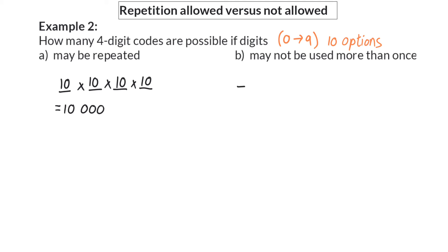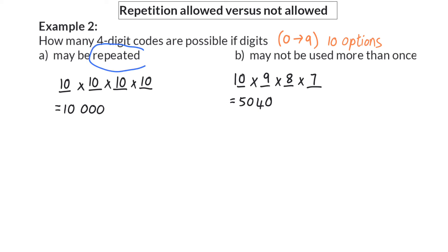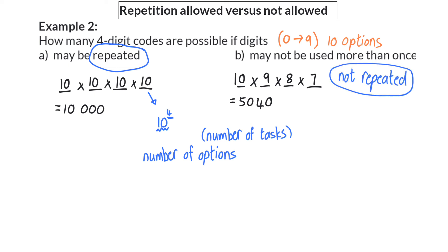In part B, the digits may not be repeated. Even though we still have four tasks, only the first task has all 10 options to choose from. For the second task, we've already used one option in task 1, so there are only nine left. At task 3, two options have been used and there are eight options left. And for task 4, seven options remain. So here we only have 5,040 different possibilities. When options may be repeated, you can write this in exponential form: 10 to the power of 4, where the base is the number of options and the exponent is the number of tasks. When options may not be repeated, the number of options decreases by one per task.